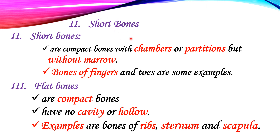The third group of bones is known as flat bones. Flat bones are compact bones that also have no cavity or hollow. Examples are bones of the ribs, sternum, and scapula. These are examples of flat bones. The types of bones are long bones, short bones, and flat bones.